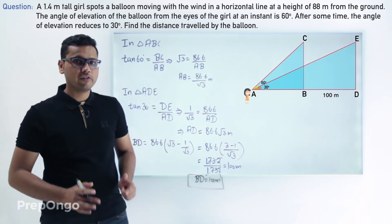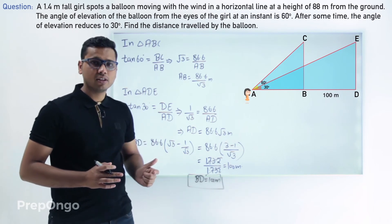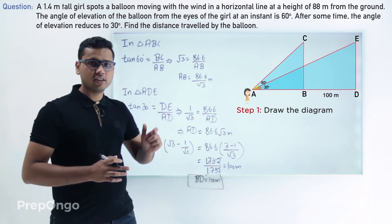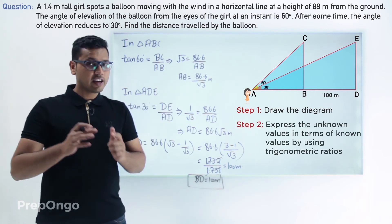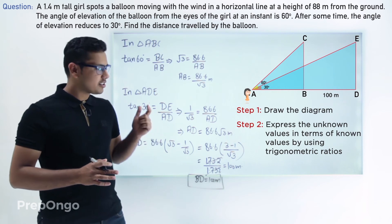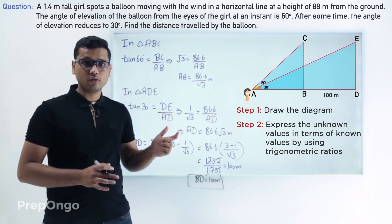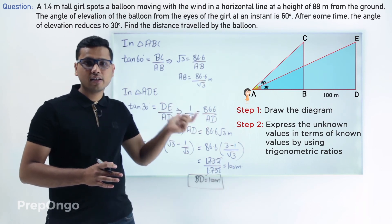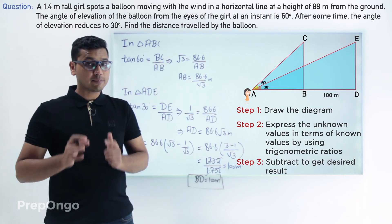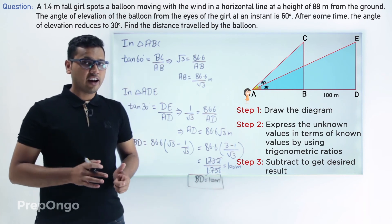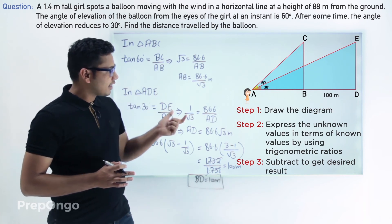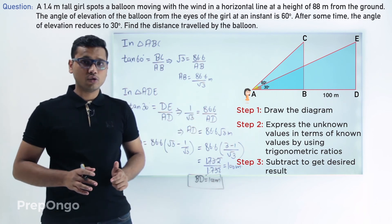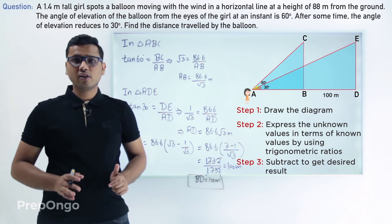In this example we followed similar steps. First we drew the diagram showing all the triangles involved. Then we applied trigonometric ratios to find the values of the unknowns — in this case we calculated the values of AD and AB. Finally we subtracted AB from AD to get the desired value of the distance moved by the balloon.